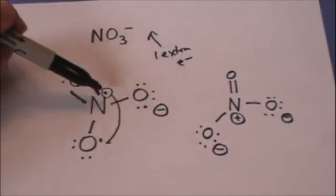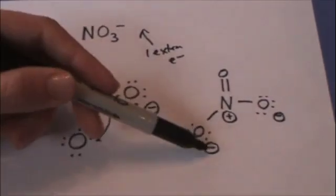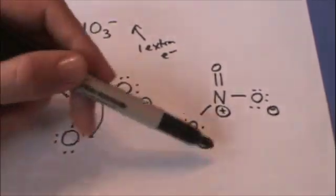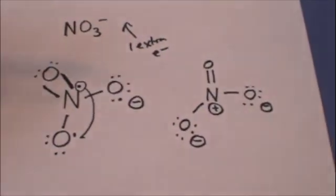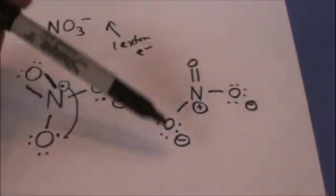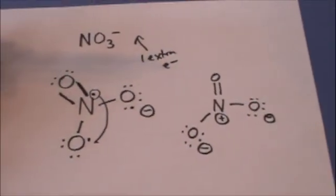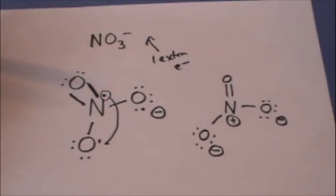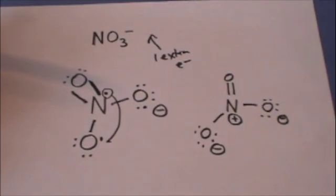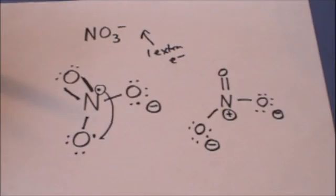Well, it can't do that because nitrogen can't expand its octet. So it just moves over, and now this oxygen has a negative formal charge, and this nitrogen has a positive, and that oxygen has a negative. So overall, the charge is just minus 1. We only added one electron to this structure, and then we just moved the electron over here.